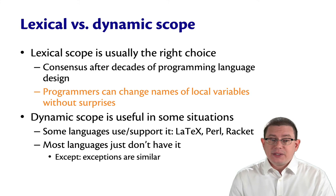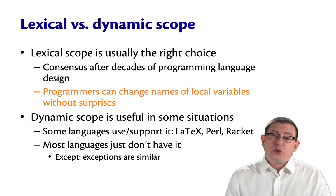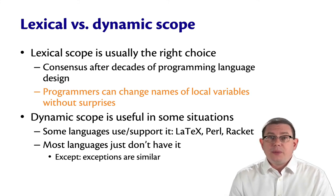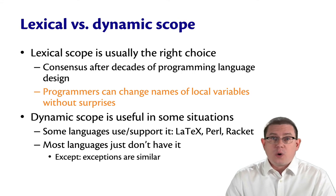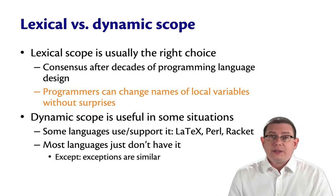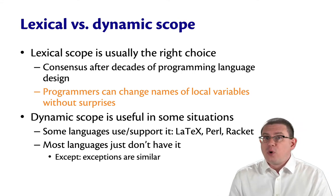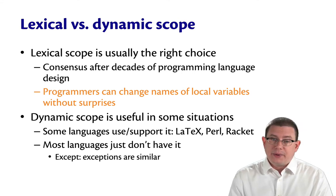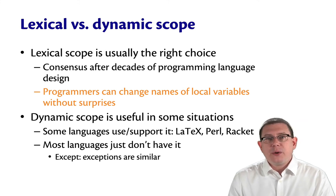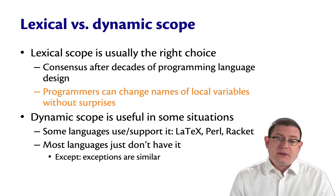Dynamic scope is still useful in some situations, and so some languages use it by default or offer some kind of support for it — LaTeX, Perl, Racket, and some others. Most languages these days, though, just don't have it.